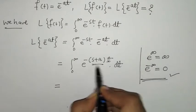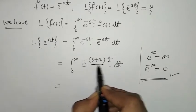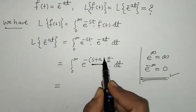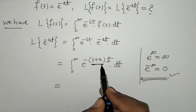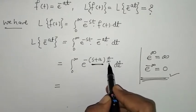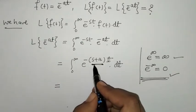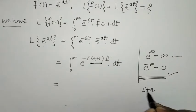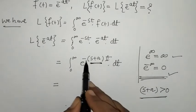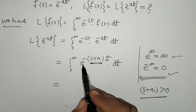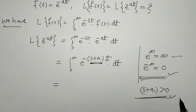Now we have to find the condition on s. When we put the limit e raised to minus infinity, this will give 0. But if we consider s plus a less than 0, meaning s plus a is negative, then negative times negative gives positive and we get an e raised to infinity term, so the Laplace transform is not well-defined. Therefore we require s plus a greater than 0 — when s plus a is positive, the negative and positive together give a negative exponent, so we get the e raised to minus infinity term. The condition is s plus a greater than 0.